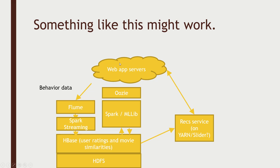When your application servers say, 'I need movie recommendations for user ID 123,' my recommendation service can say, 'Okay HBase, give me all the past movie ratings for user 123.' Take the good ones, find similar movies based on my other table of movies similar to other movies, get the list of all movies similar to the ones this user liked, filter out the ones they've already rated, and give that back as the recommendations to display on the front end.